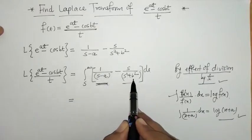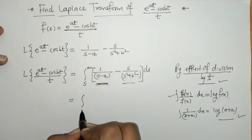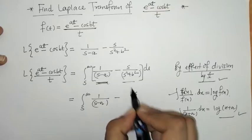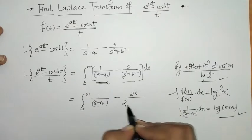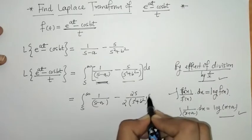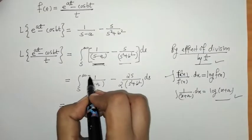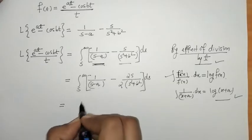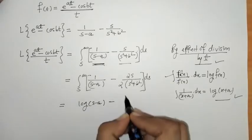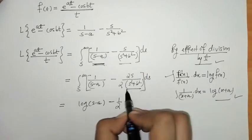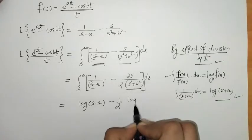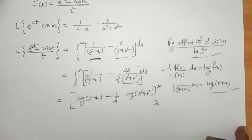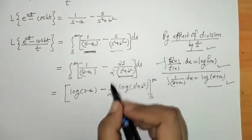For the second term, the derivative of s² plus b² with respect to s is 2s, so we adjust by placing 2 in the denominator. Separately, the integral of 1/(s minus a) gives log(s minus a), and 1/2 times log(s² plus b²). This is evaluated within the limit from s to infinity.